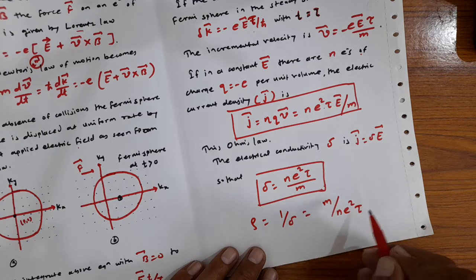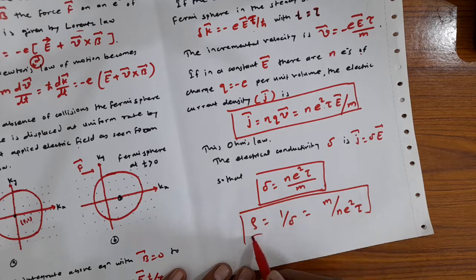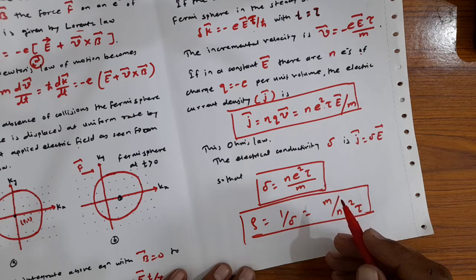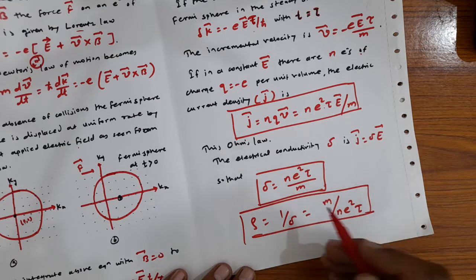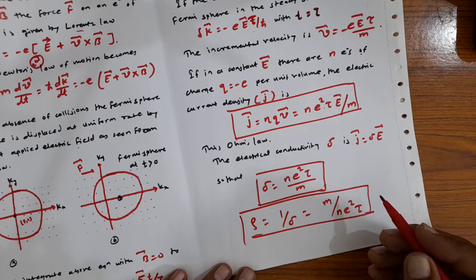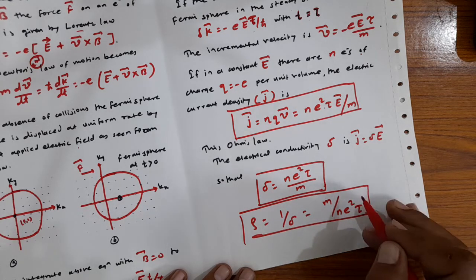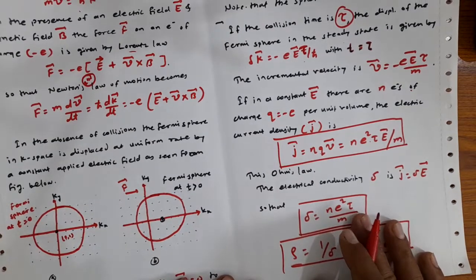It is easy to understand the result for electrical conductivities: we expect the charge transported to be proportional to the charge density ne, the factor e/m accounts for the acceleration in a given electric field proportional to e and inversely proportional to its mass m, and the collision time τ describes the free time during which the electric field acts on the carrier. This completes the discussion of electrical conductivity.